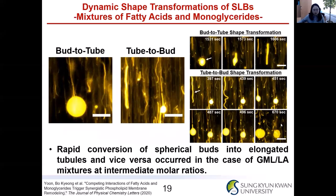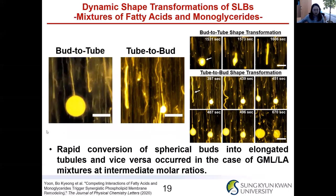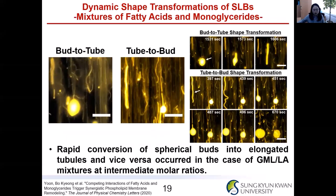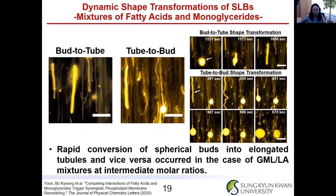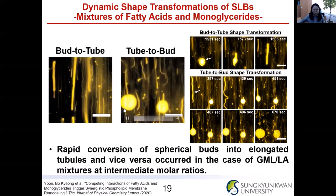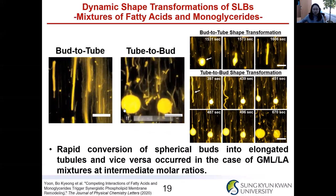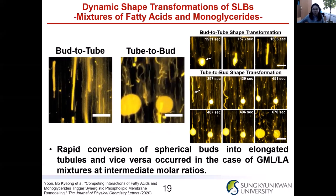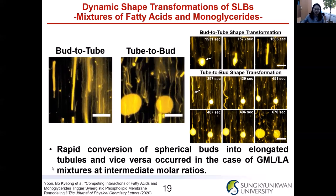Another interesting transformation is bud-to-tube and tube-to-bud formation. The bud transforms to a tube over time, and this tube sheds back to a bud. This rapid conversion of buds into elongated tubules and the opposite transformation happens especially at intermediate molar ratios of the mixtures.